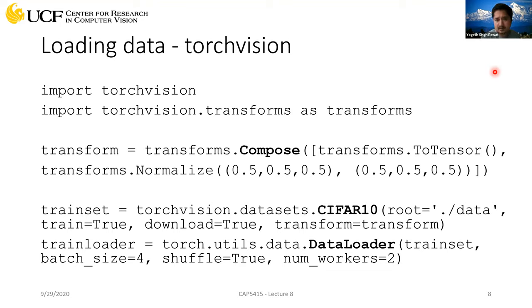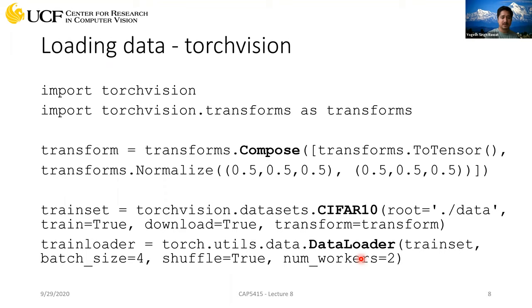Batch size is the number of images used per iteration. You need a DataLoader because you can't load all your data into CPU memory at once. What you do is load data one batch at a time and send that batch to your network or GPUs. Training is done on the GPUs. GPUs are much faster than CPUs.